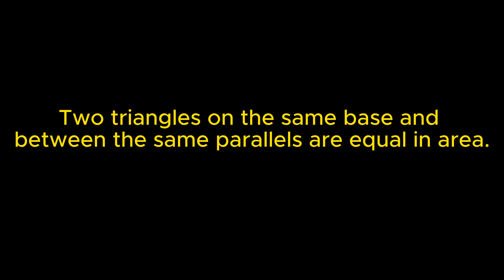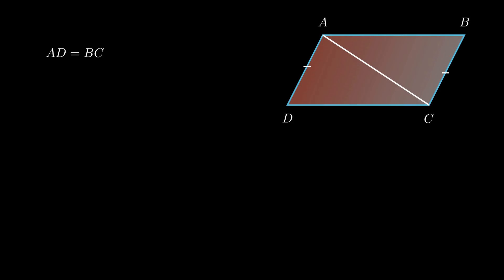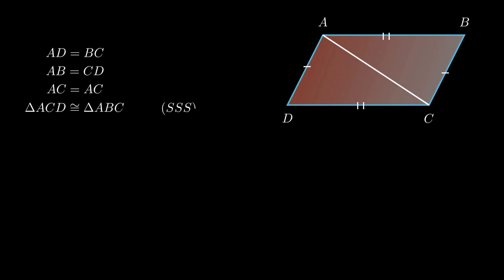The second theorem states that two triangles on the same base and between the same parallels are equal in area. Consider a parallelogram ABCD and let AC be the diagonal, forming two triangles ABC and ADC. Since opposite sides of a parallelogram are equal, side AD equals side BC and side AB equals side CD. AC is the common side, so by SSS criteria, triangle ACD is congruent to triangle ABC. Therefore, area of triangle ACD equals area of triangle ABC.